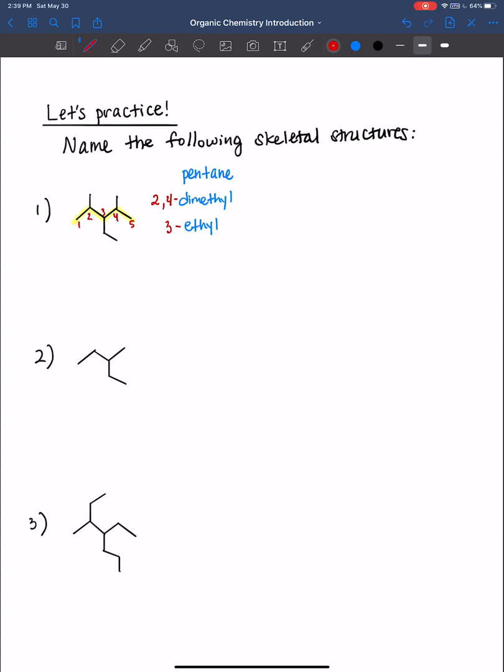And then you glue everything in such that the substituents are in alphabetical order, not including prefixes. And so does the dimethyl come first or the ethyl? Good. The ethyl goes before the methyl. Remember, we don't include the di in the alphabetical rule. So the full name is 3-ethyl-2,4-dimethylpentane, all one word.